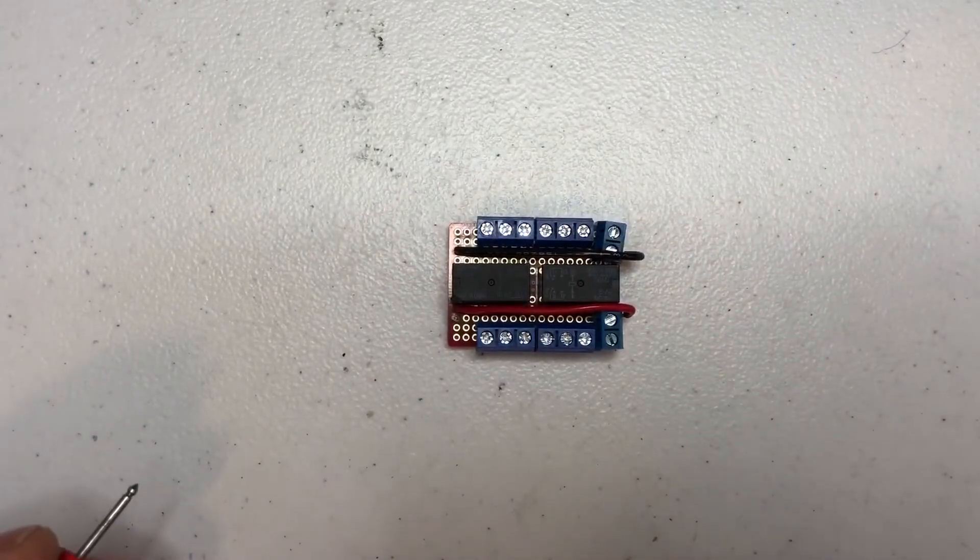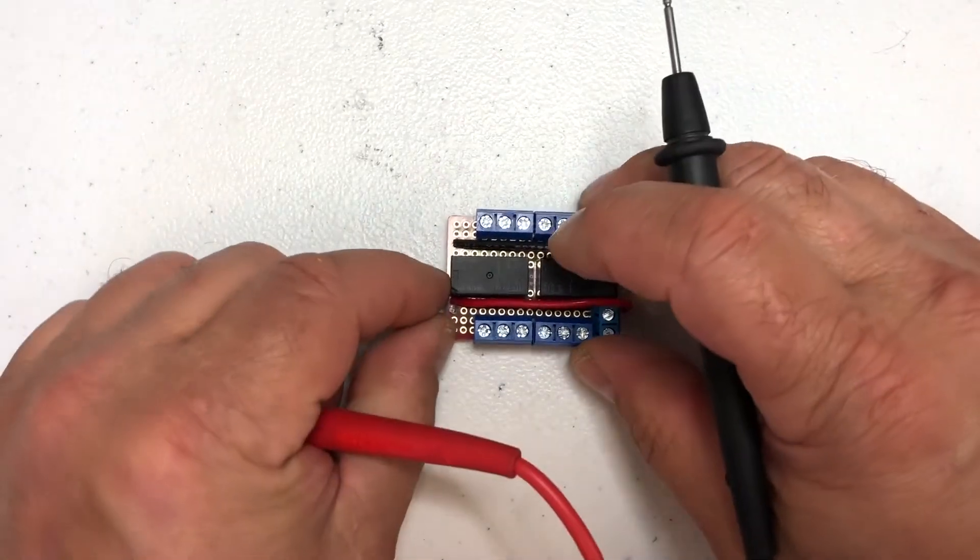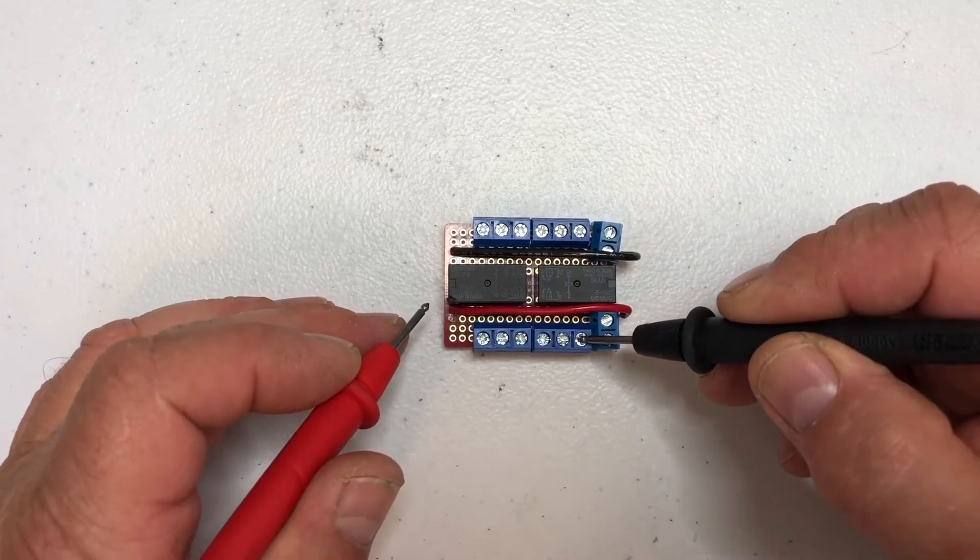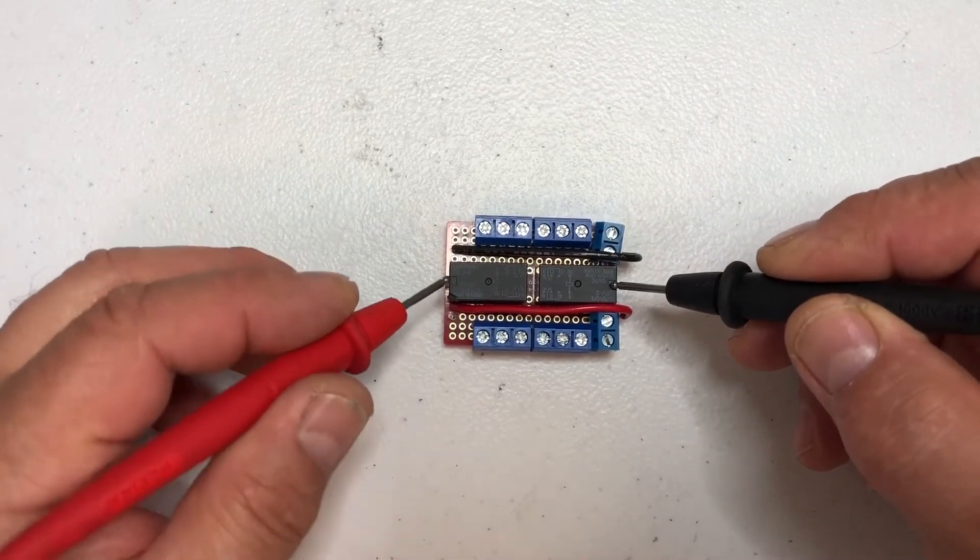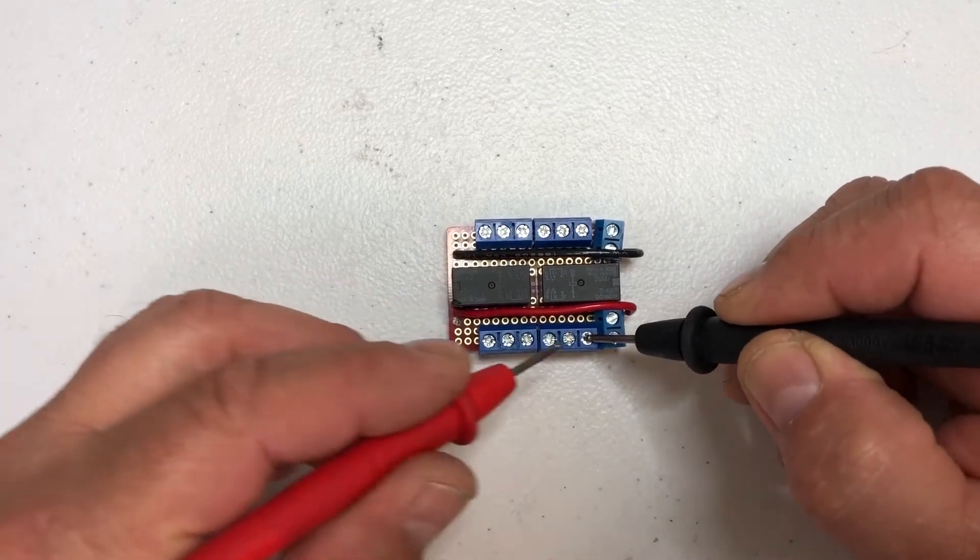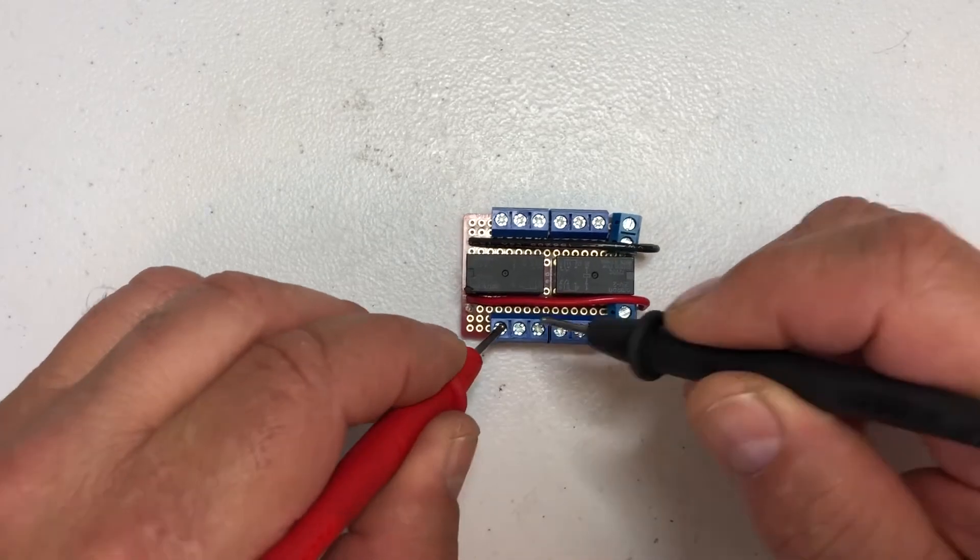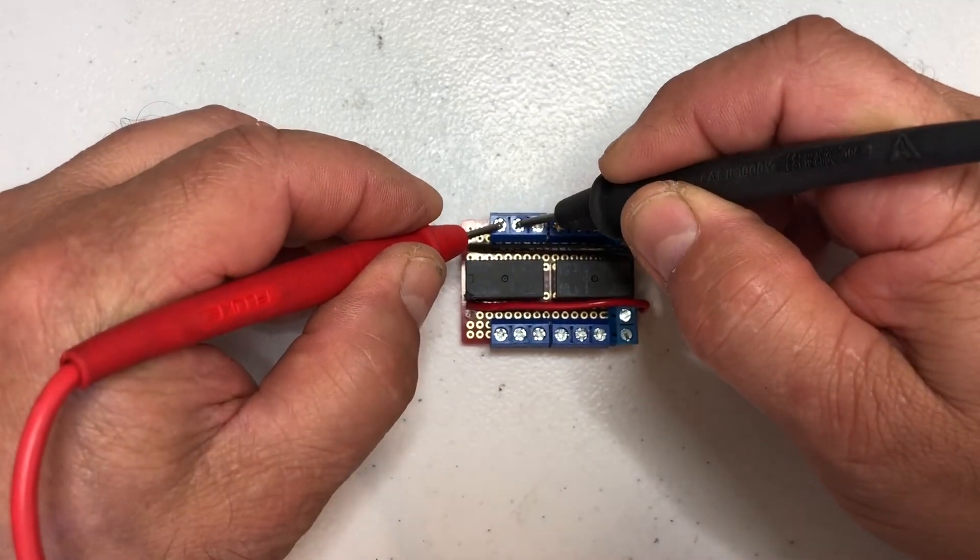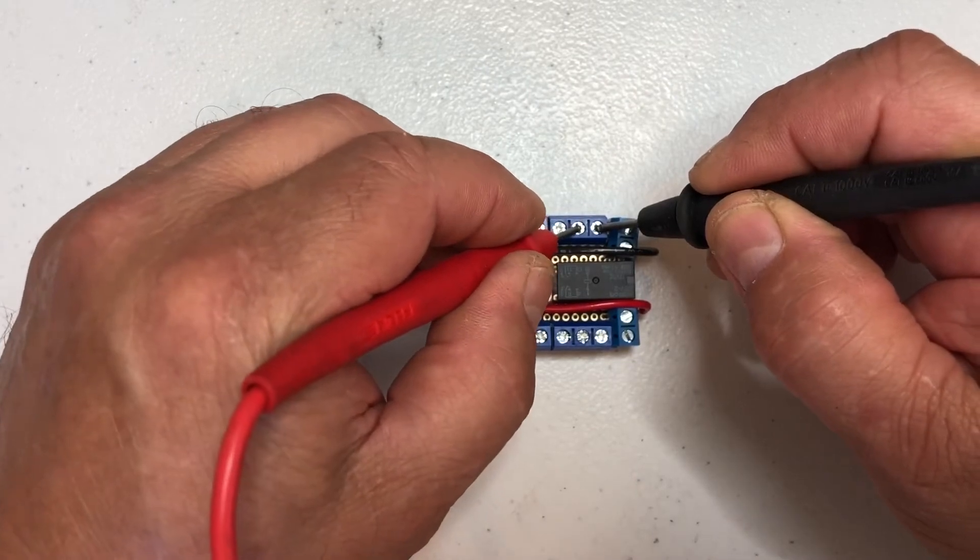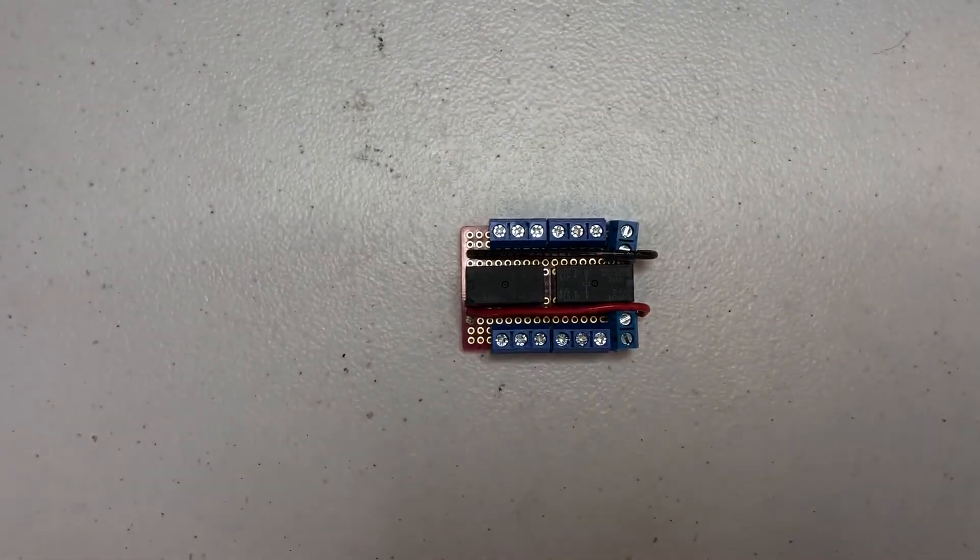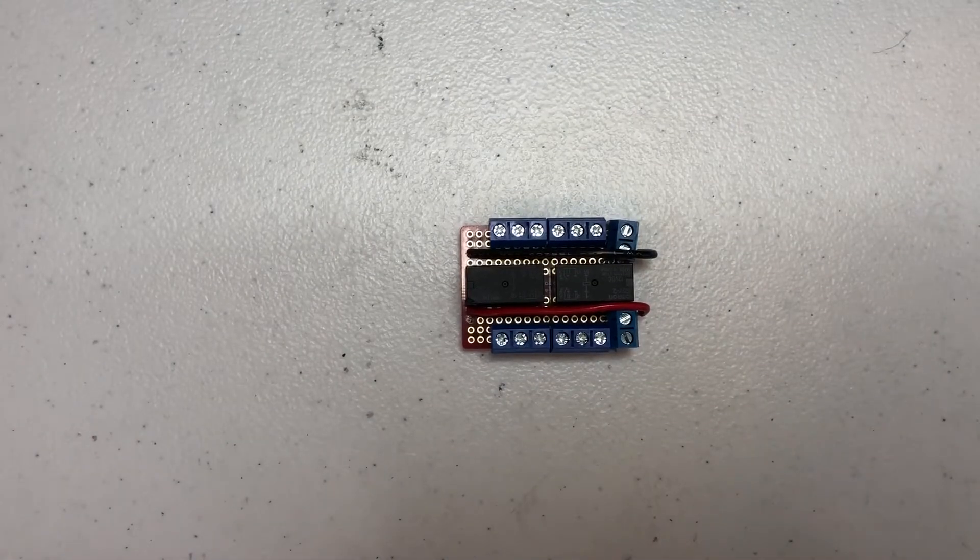So sitting in the non-energized state, the post closest to the coil, the coils are on the opposite ends, is going to be the common. So the one next to it is the one that's closed right now. All right, so this one's open. And then we'll energize it and I'll show you what happens.